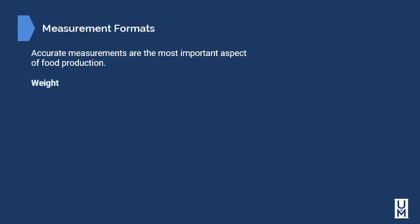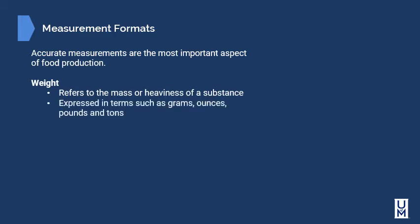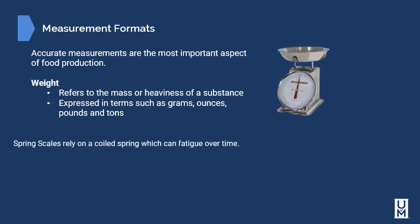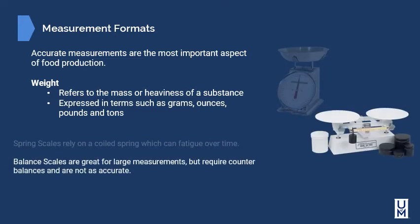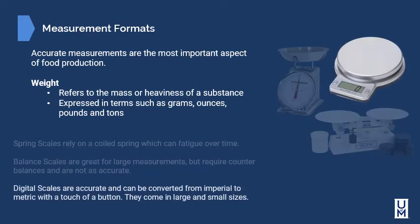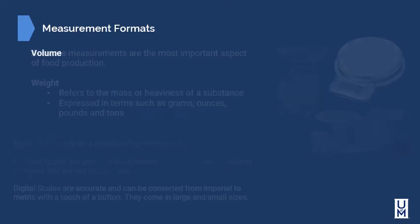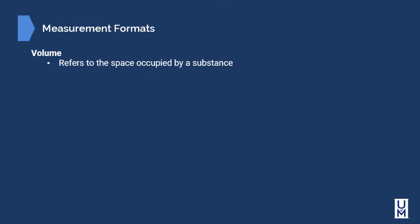Weight refers to the mass or heaviness of a substance. It's expressed in terms such as grams, ounces, pounds, and tons. Spring scales rely on coiled springs which can fatigue over time. Balance scales are great for large measurements but require counterbalances and are not as accurate. Digital scales are accurate and can be converted from imperial to metric with the touch of a button — they come in large and small sizes.